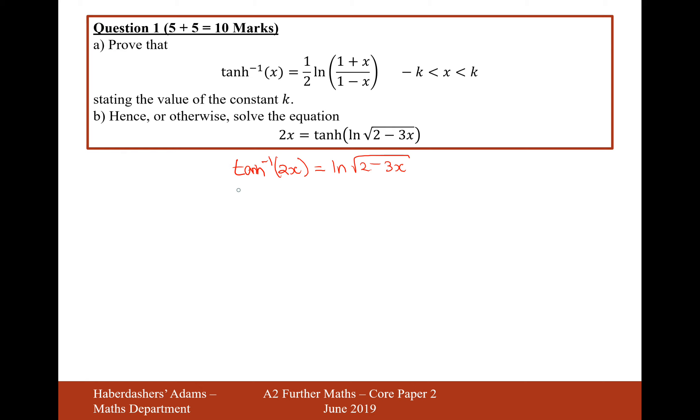And then apply that definition from above, so that's going to be 2x instead of x. So it's going to be half ln of 1 plus 2x over 1 minus 2x equals ln root 2 minus 3x. Now I'm going to double both sides to move the 2 onto the other side.